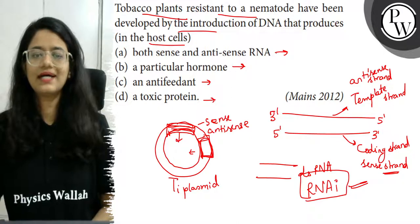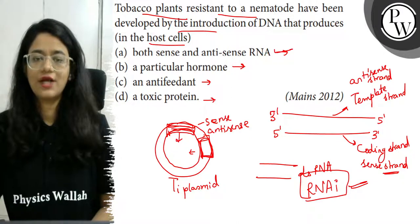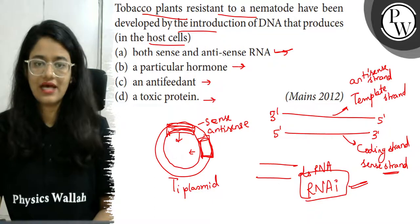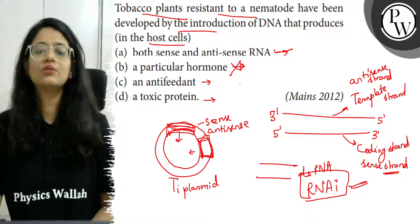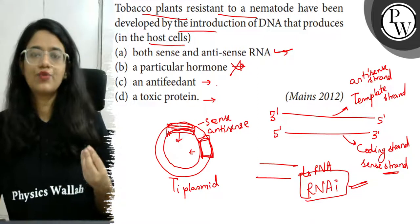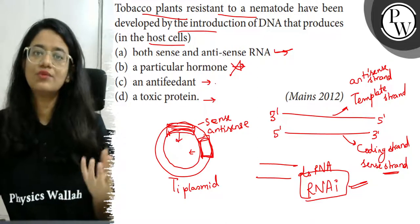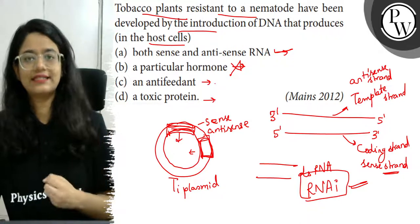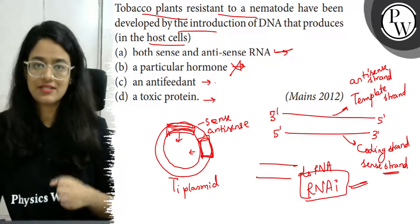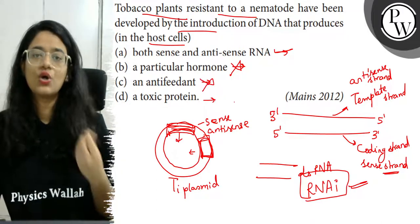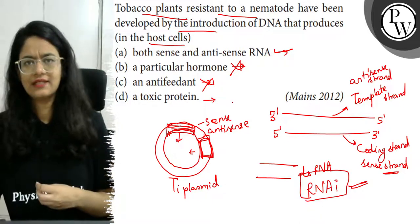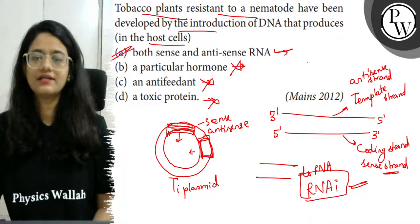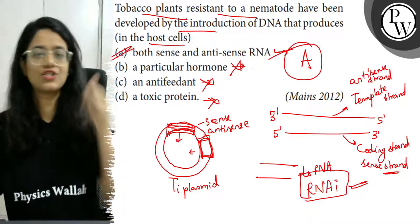So the answer here is option A — both sense and anti-sense RNA. Option B gives 'particular hormone' — hormones are not used to make plants nematode resistant, so that is wrong. Option C, anti-feedant, refers to substances like alkaloids that some plants naturally release to prevent insect attack — that is not what is happening here. Option D, toxic protein — the plant is not releasing any toxic protein here. So the correct answer is option A. Hope you have understood this question. Best of luck!